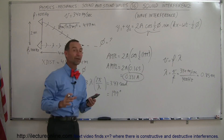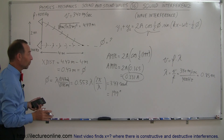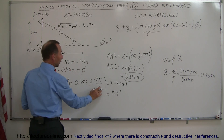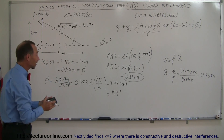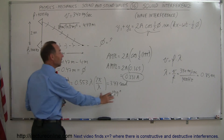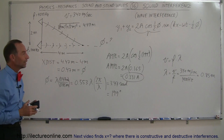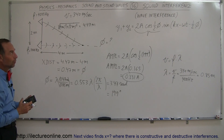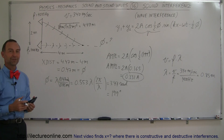That's how you figure out the interference of two waves when their phase difference is not exactly a half wavelength or exactly a full wavelength. Somewhere in between, you can still determine the resulting amplitude when they meet. That's how you solve for wave interference with sound waves.